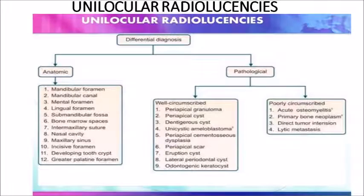Unilocular radiolucencies: bony lesions can be in some anatomic regions. Anatomic unilocular radiolucencies include the mandibular foramen, mandibular canal, mental foramen, lingual foramen, mandibular fossa, bone marrow spaces, intermaxillary sutures, nasal cavity, maxillary sinus, incisive foramen, developing tooth crypt, and greater palatine foramen.